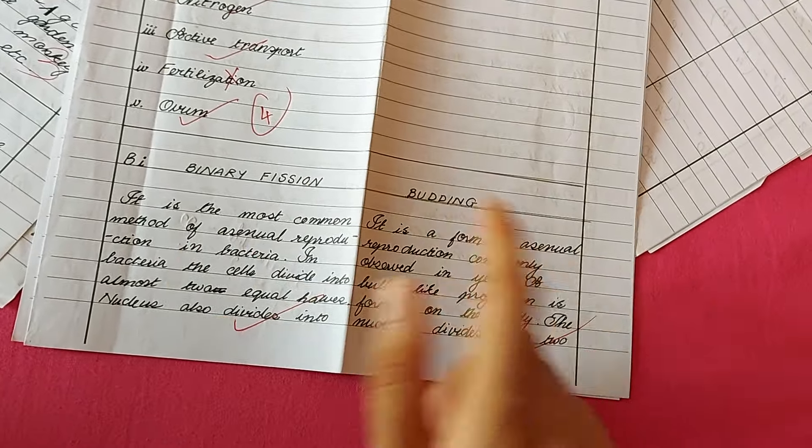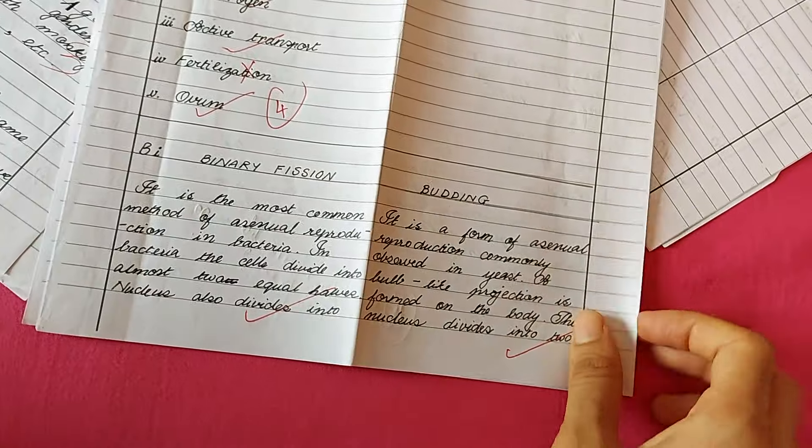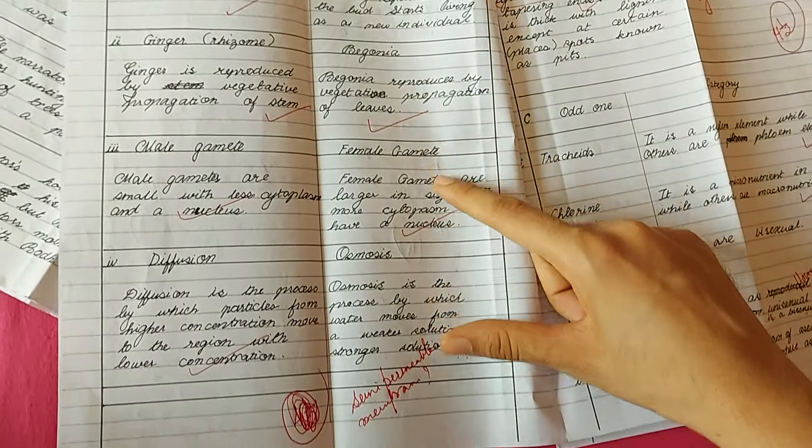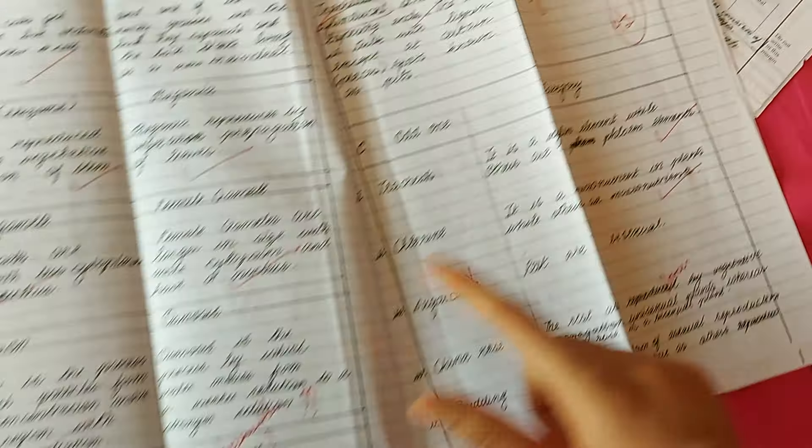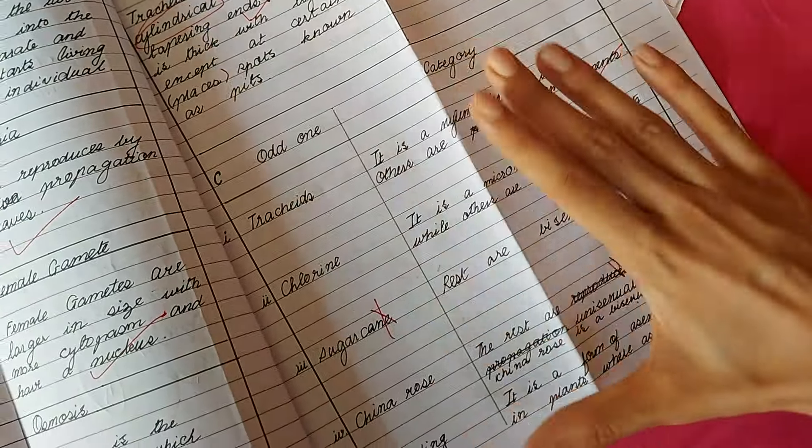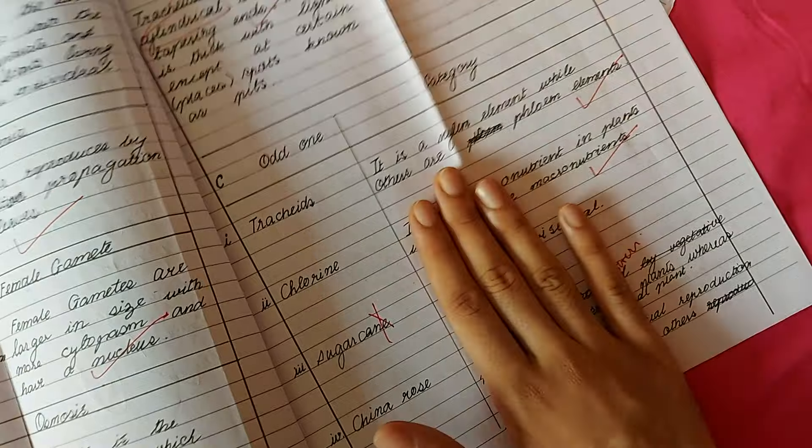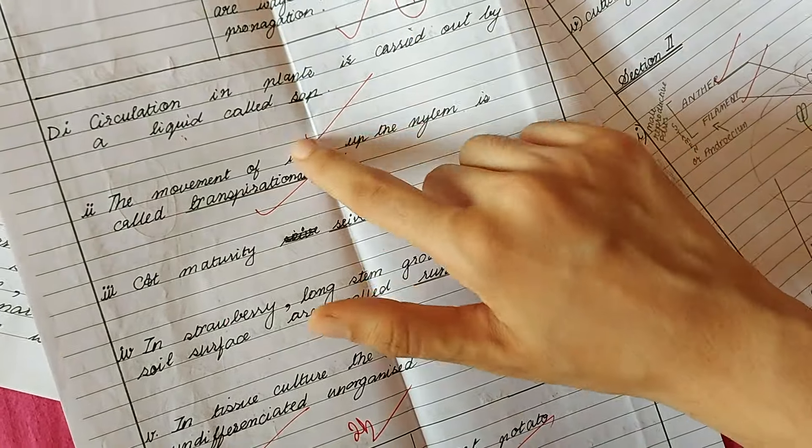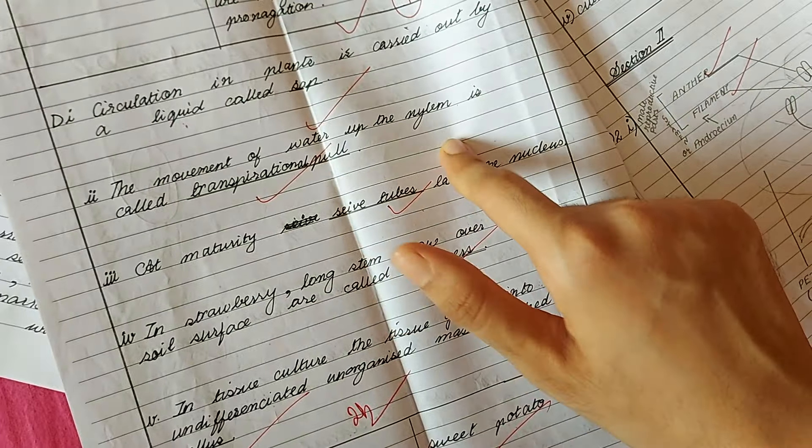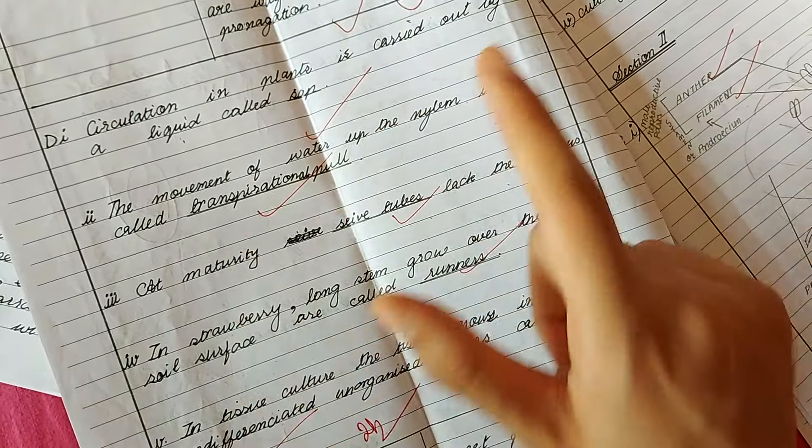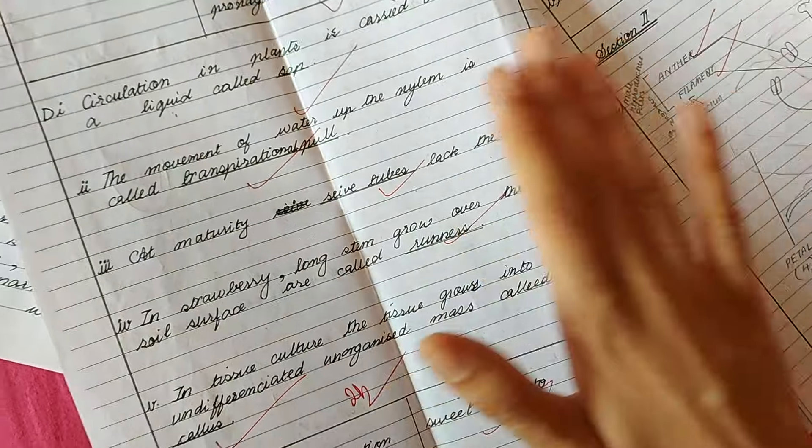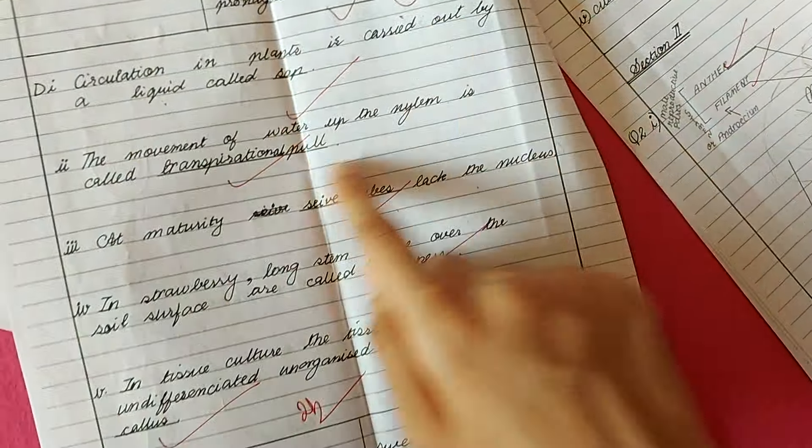When you have to write differences, always make a table, don't be lazy. Here I've made a table for each and every answer. For odd one and category, do not try to write something extra. Your answer needs to be very crisp. Generally for this section students write one or two word answers, but you can only do that if it is clearly mentioned in the paper. If not mentioned, then please write the complete sentence.